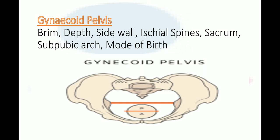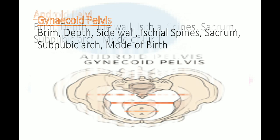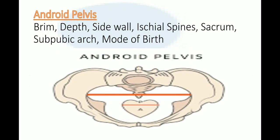The usual mode of delivery for gynecoid pelvis is vaginal spontaneous in the occipital anterior position. Now, the second type is the android pelvis. Android type occurs in 23 percent of women. The brim is heart-shaped or angulated — you can see from the figure that the brim is heart-shaped. The depth is deep.